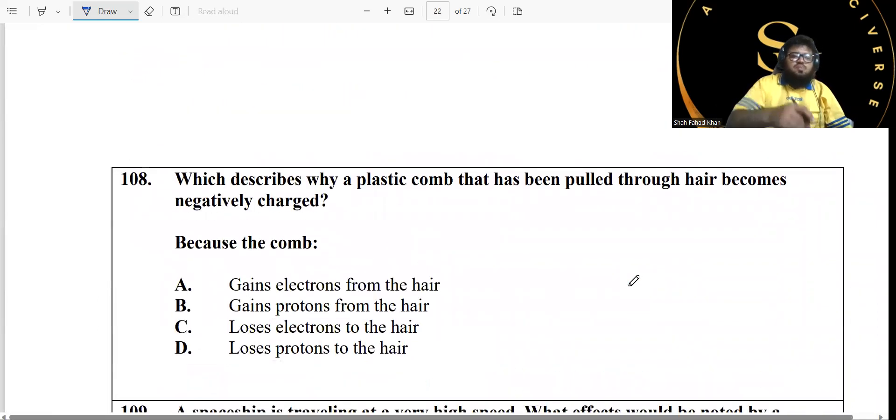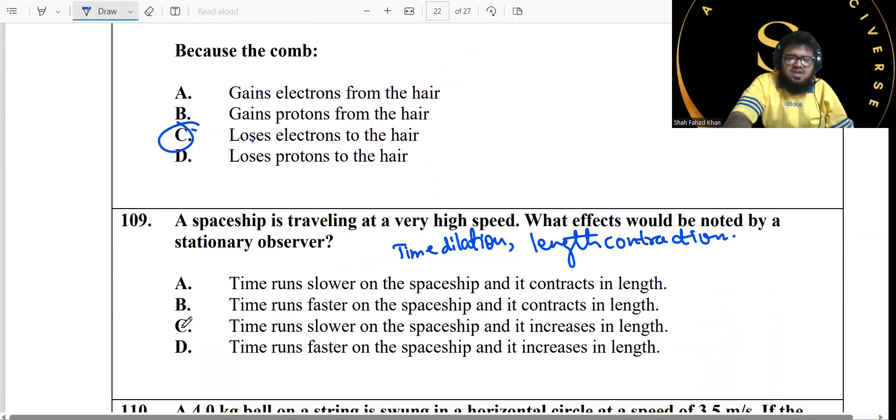Which describes why a plastic comb that has been pulled through hair becomes negatively charged? Always remember, guys, it's always the electrons that move. It's never the protons that can be transferred. Protons are always inside the nucleus, they never get transferred. It's because of the electrons. Why is it positive? Because of loss of electrons. Simple as that. And it becomes positive due to the deficiency in the negative charges.